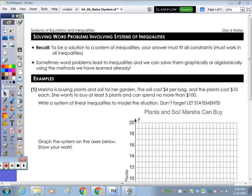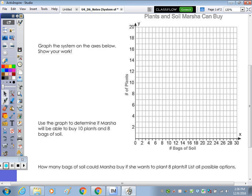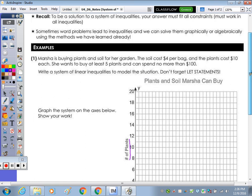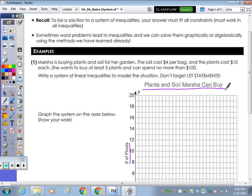If you look at the actual grid, it tells you what your variable for x is and your variable for y is. On the grid down below, it says our x axis is number of bags of soil. So x is the number of bags of soil, where y is the number of plants. Title of the graph is plants and soil that Marsha can buy. So Marsha's buying plants and soil for her garden. The soil is going to cost $4 per bag, and the plants are $10 each.